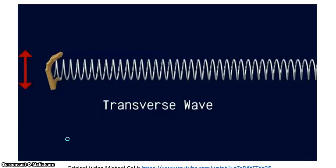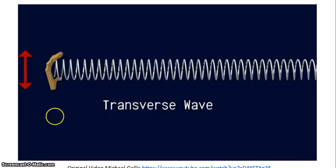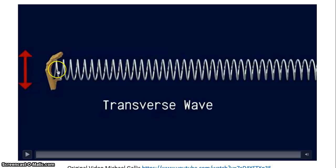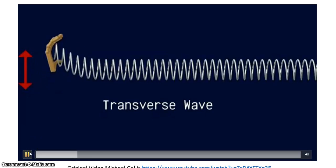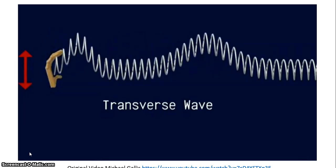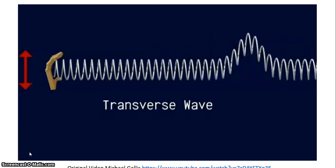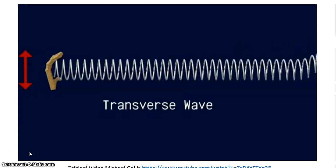If we have a look at transverse waves, in this case here the hand is going to be moving up and down so the oscillation of the particles is going to be at right angles or perpendicular to the propagation direction of the wave. As the hand moves up and down the individual bits of the slinky oscillate up and down but the wave progresses left to the right at right angles to the oscillation of the particles.